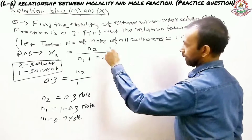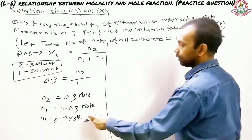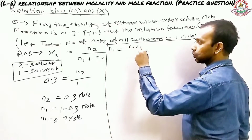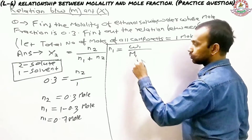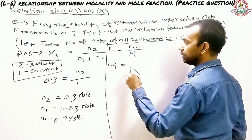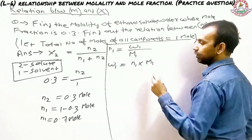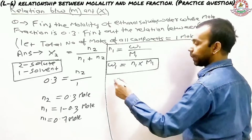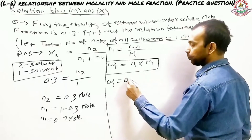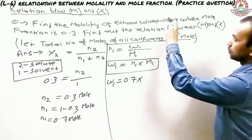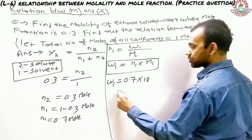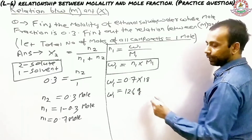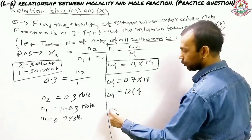Now that we have n₁, we use the relation: number of moles = mass / molar mass, which gives w₁ = n₁ × M₁. Since the solvent is water, M₁ = 18 g/mol. So w₁ = 0.7 × 18 = 12.6 grams.